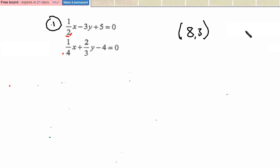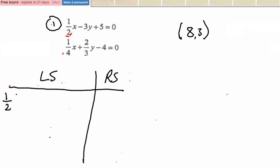So I'm going to take equation 1 first of all. And here's what equation 1 looks like in a left side, right side check. So I have one half of x minus 3y plus 5 on the left. And on the right I have 0. And I am checking to see if x equals 8 and y equals 3